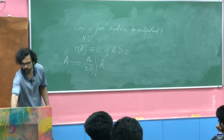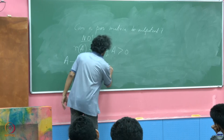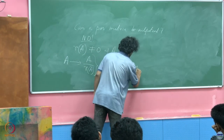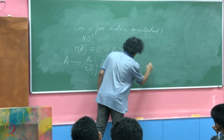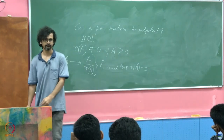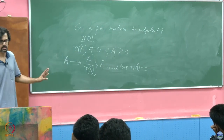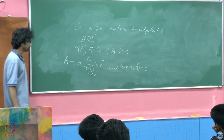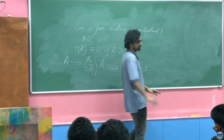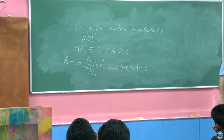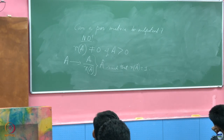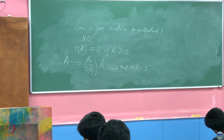Therefore, the spectral radius of Â is definitely unity. Now, what are the claims I made? I claimed that you have exactly one eigenvalue on the spectral circle — that is, equal to the spectral radius. You cannot have any other eigenvalue anywhere on the complex plane. Since we have normalized, this boils down to the unit circle.